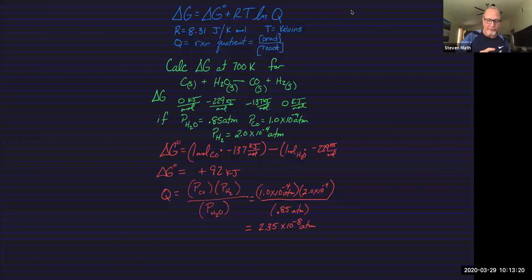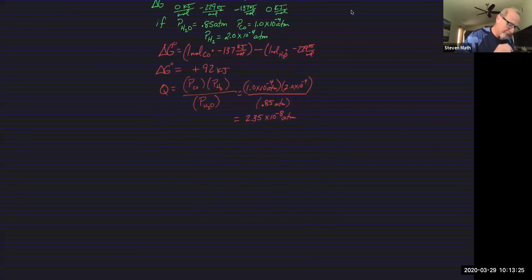So now we have G, now we have Q, and now we can put these together and find out what happens under non-standard conditions. So in this case, delta G non-standard equals delta G standard plus RT ln Q. Let's plug in our values. We're going to take and put this G into joules.